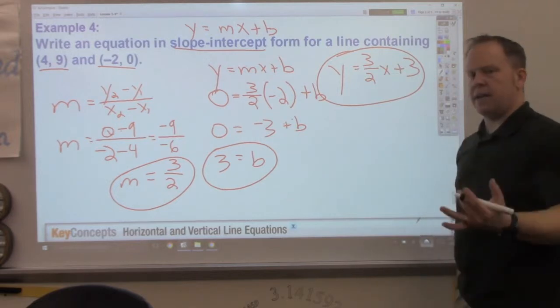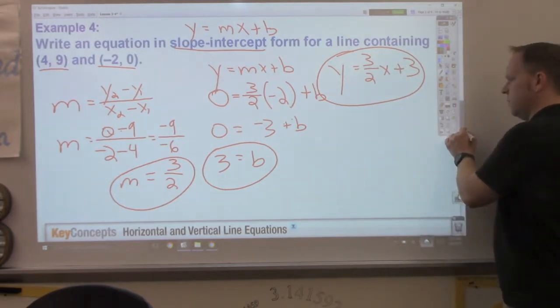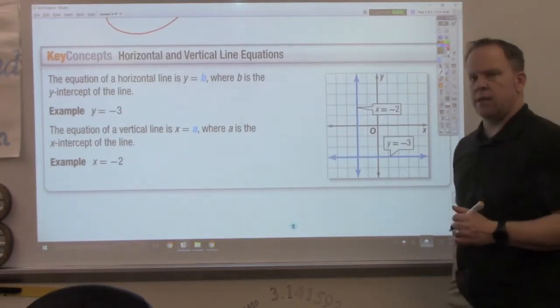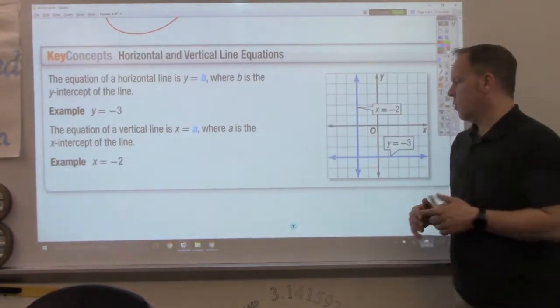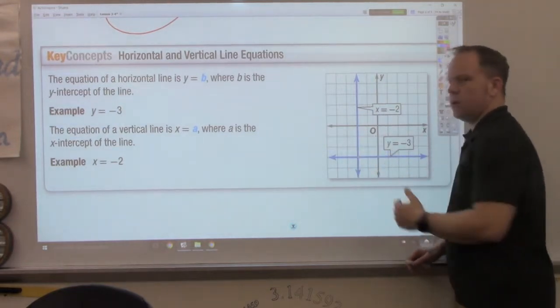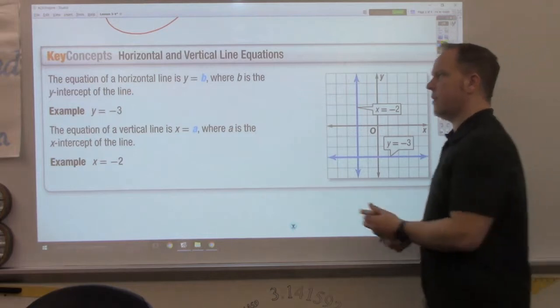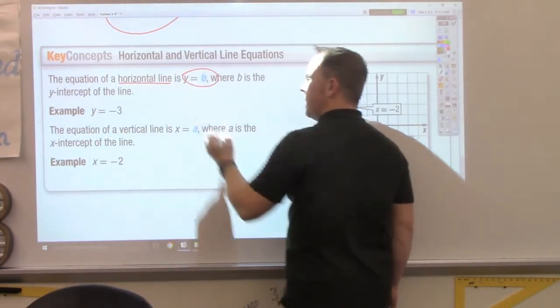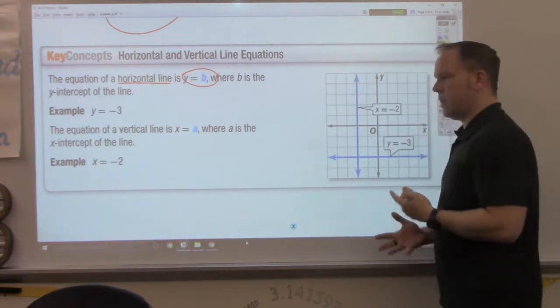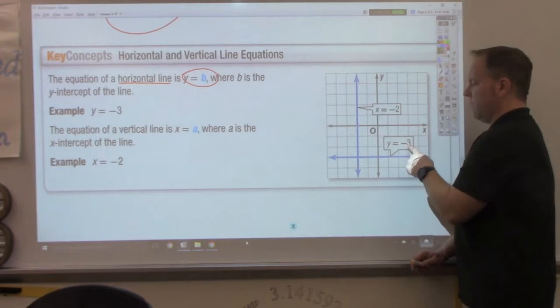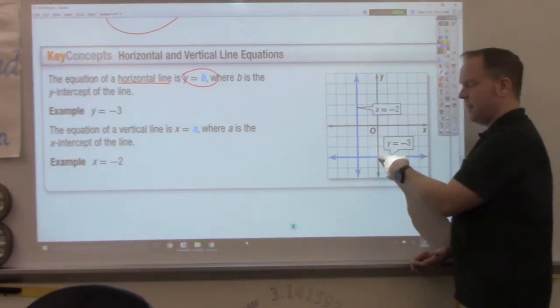Now, a key concept for geometry right now is what happens with horizontal and vertical lines. Remember, previous lesson, one horizontal line is always perpendicular to a vertical line. But, what do their equations look like? Well, if I have a horizontal line, that's always y equals whatever your y-intercept. So, it's y equals some number. So, this horizontal line is y equals negative 3 because I crossed the y-axis at negative 3.